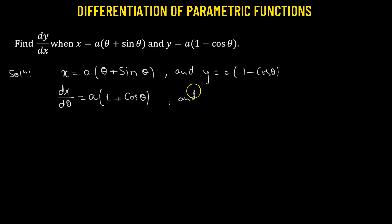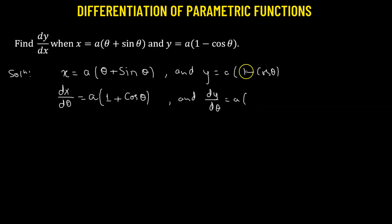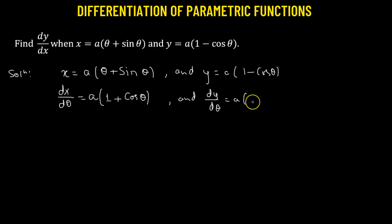Now taking the derivative of y with respect to theta: a is a constant multiplied by the bracket. Derivative of 1, being a constant, is 0. Minus the derivative of cosine theta is negative sine theta. Since we already have a negative sign, this becomes simply positive sine theta. So dy/dθ = a·sinθ.